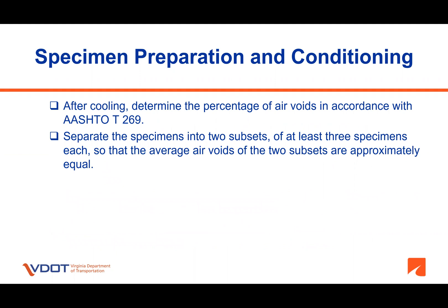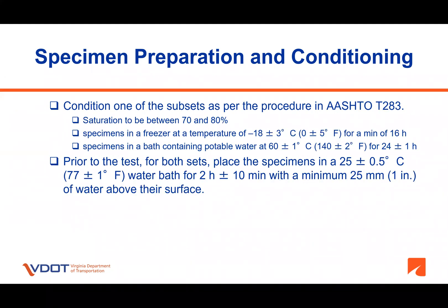Please note that VDOT SPEC 211 waives the curing requirements given in AASHTO T283 standard. Once specimens are made and cooled down, determine the air void content of the specimens following AASHTO T269. Then separate the specimens into two subsets such that the average air void content of the subsets are approximately equal. Once specimens are grouped, condition one of the subsets following the procedure in AASHTO T283.